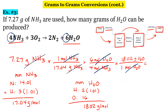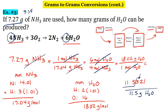And I get 11.5321. We have three significant figures in our original number, so we need three in our final answer. Going from left to right, underlining the first three significant digits and looking at the fourth, we're going to leave this as 11.5 grams of water. That's how to do grams to grams — follow the flowchart and you can't go wrong.